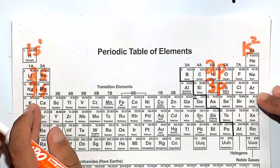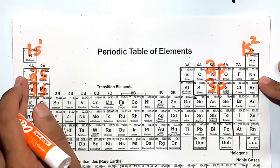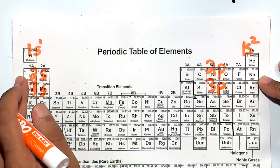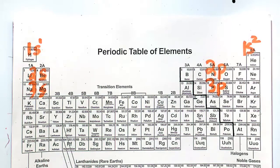Notice argon has filled a 3s and 3p, it's noble. Neon has filled a 2s and 2p orbital, it's noble. Helium has filled a 1s orbital, so it's noble. Noble gases fill up the orbitals, essentially.